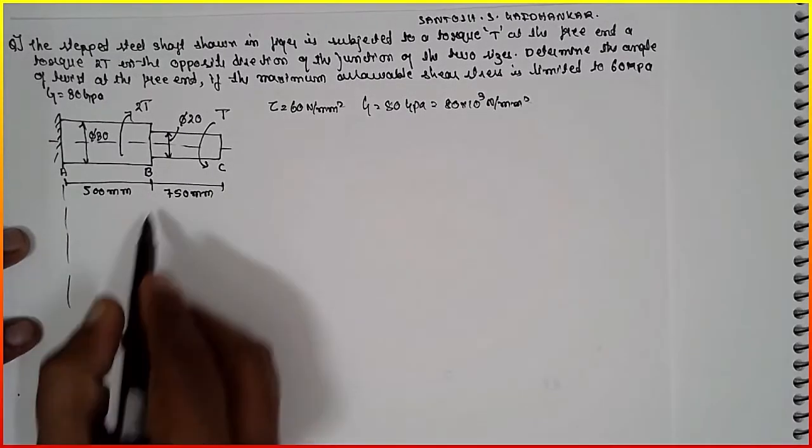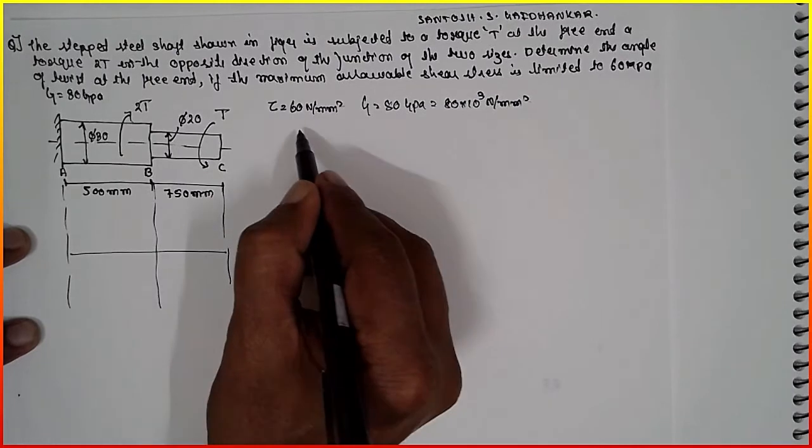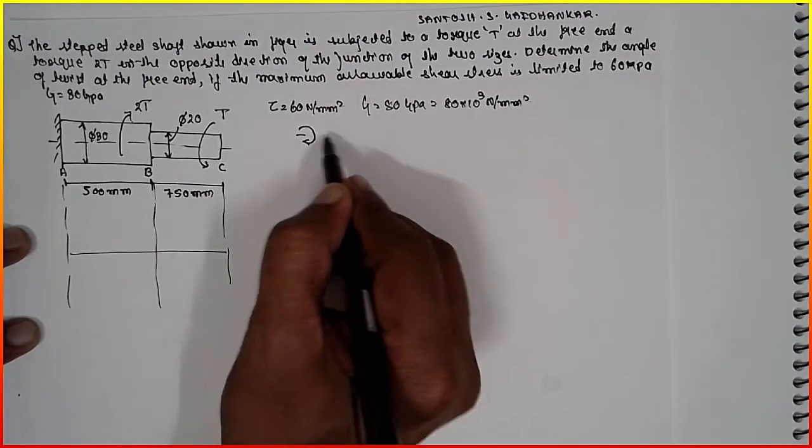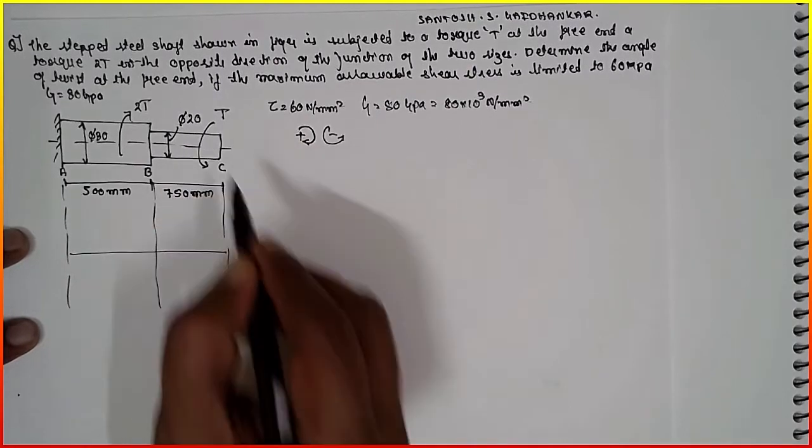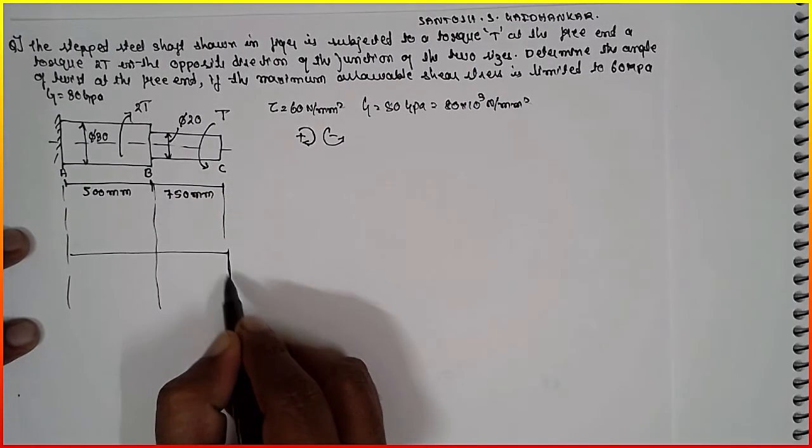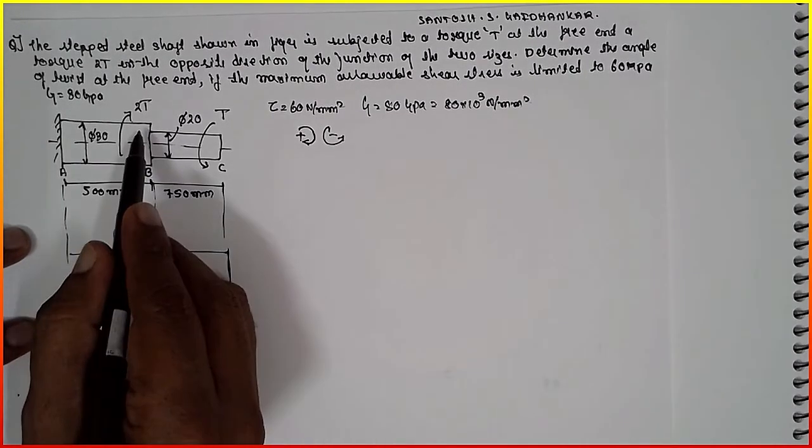I am going to draw the diagram here. Clockwise is positive, anticlockwise is negative. Now it is anticlockwise, therefore straight line. There is no load. Minus T. Next, it is 2T.